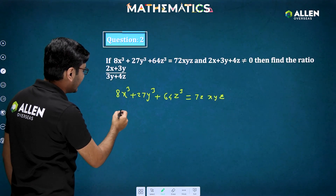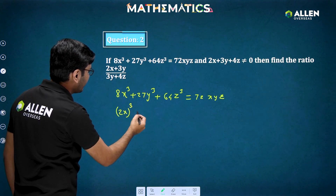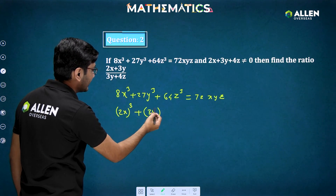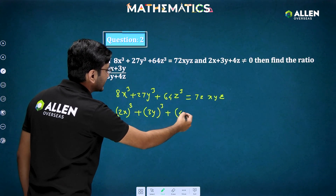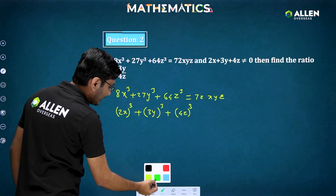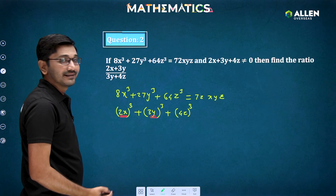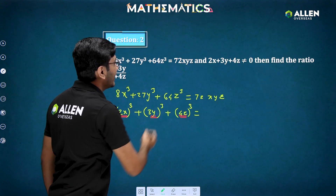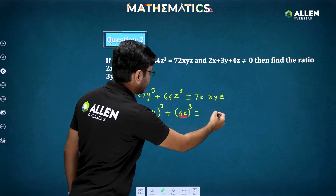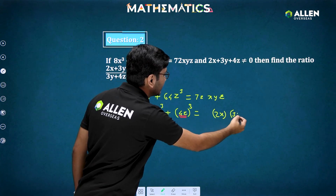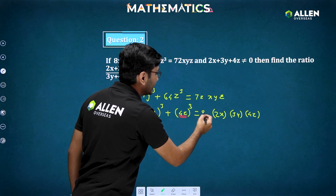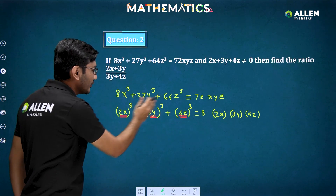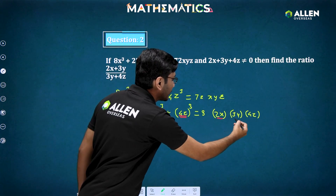I'll rewrite 8x³ as (2x)³, 27y³ as (3y)³, and 64z³ as (4z)³. So my three numbers are 2x, 3y, and 4z. The right-hand side 72xyz can be written as 3 × (2x)(3y)(4z). This means the sum of cubes of the three numbers equals three times their product.